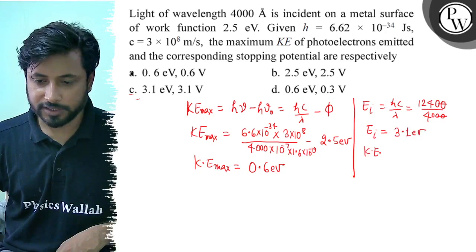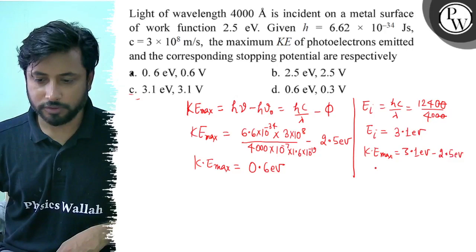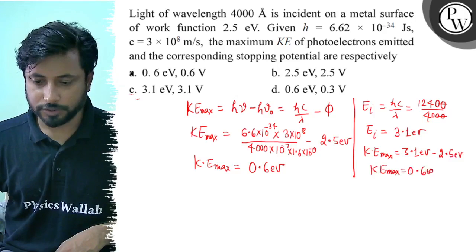Kinetic energy KEmax equals E incident minus phi. 3.1 electron volts minus 2.5 electron volts. So KEmax value is 0.6 electron volts. This is the KEmax value.